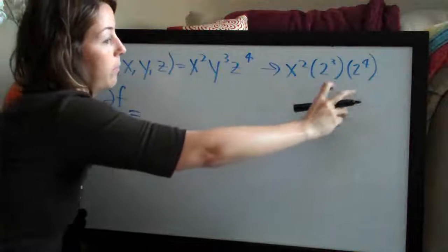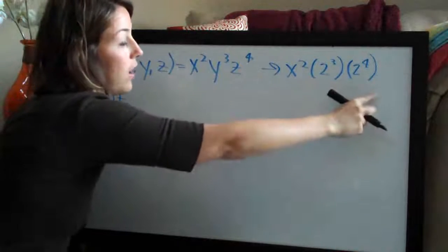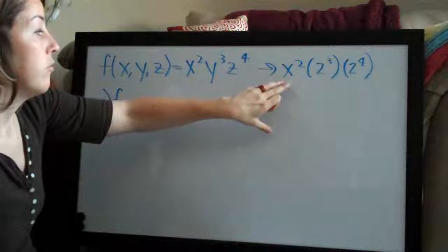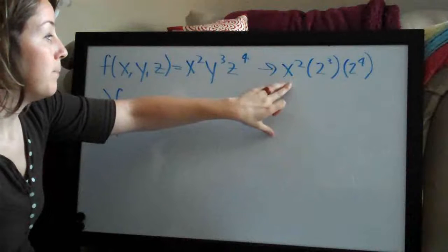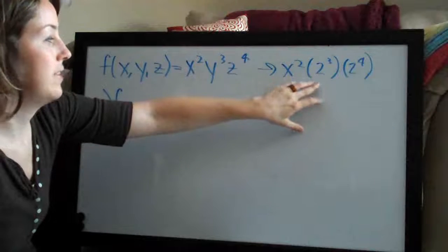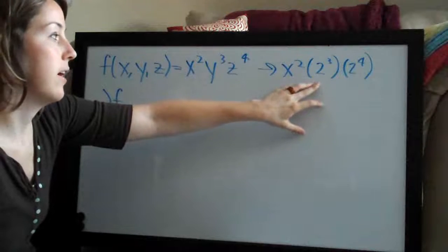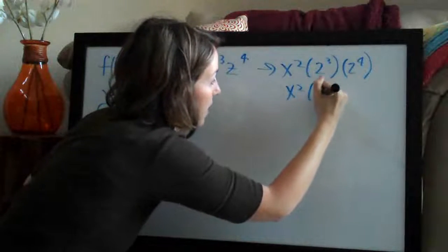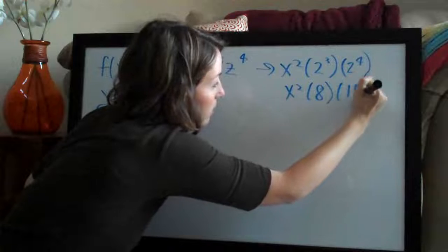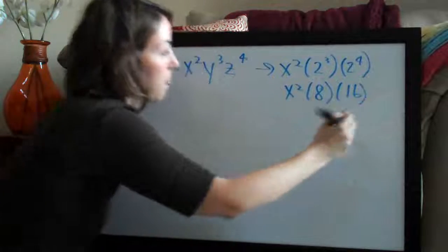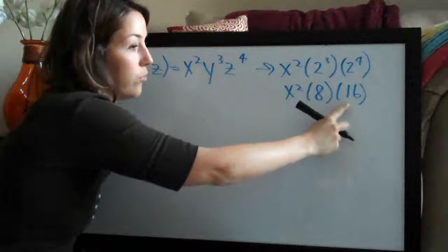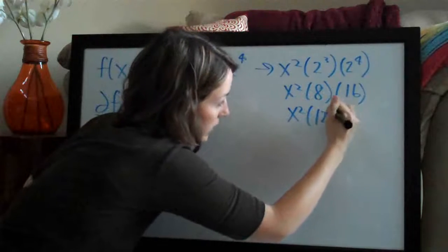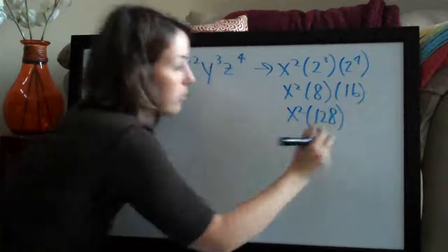So since we're keeping these constant, this is how the equation would simplify. If you multiply this out, this would actually be x squared times 8 and this would be times 16, so this would be 80 and 48, so this would be x squared times 128, if you simplified that.